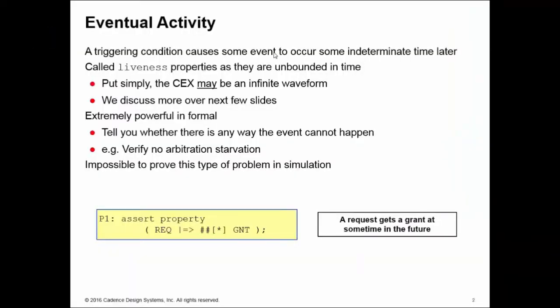A typical requirement, especially in formal, is to describe something known as eventual activity. If you have something like this, for example, if I have a request at some future cycle I must see, or some later cycle, I have a grant. That's the kind of thing that you can't prove in simulation. You're never sure in simulation.